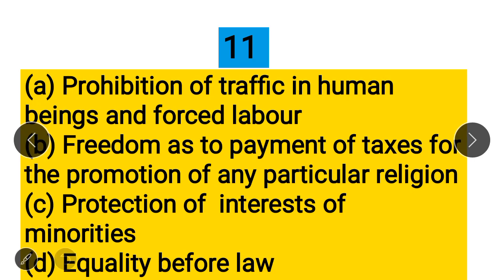Question 11: Which of the following is correct with respect to the right against exploitation? Option A: Prohibition of Traffic in Human Beings and Forced Labour, Option B: Freedom as to payment of taxes for promotion of any particular religion, Option C: Protection of Interest of Minorities, Option D: Equality before Law. The correct answer is Prohibition of Traffic in Human Beings and Forced Labour, which is what the article on right against exploitation deals with.